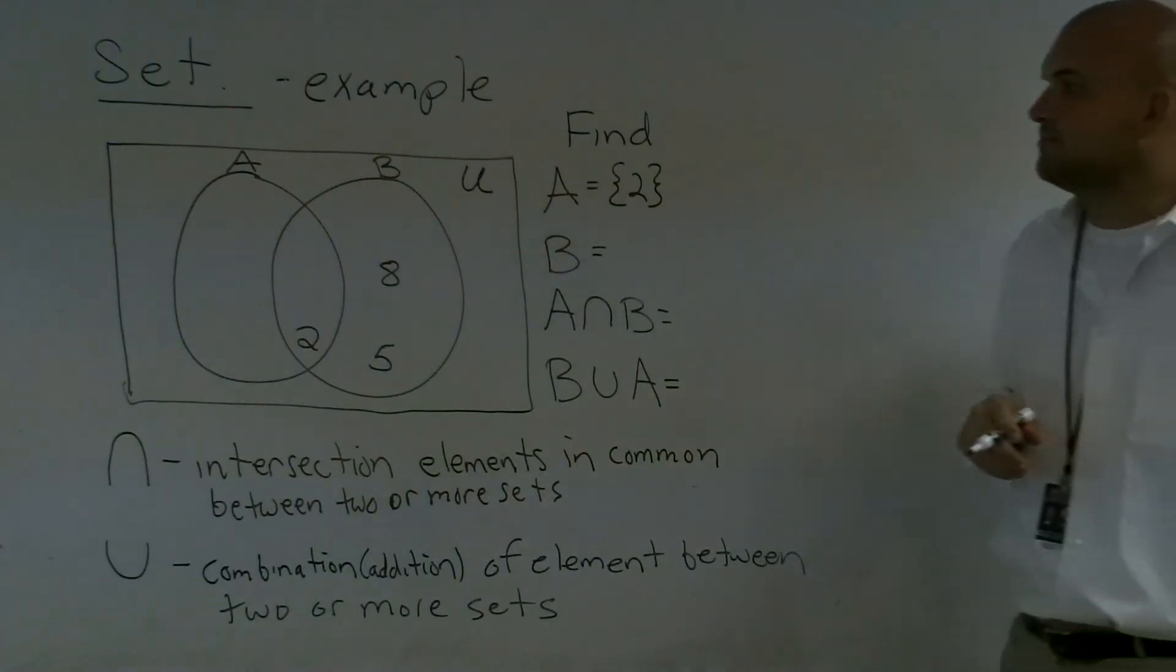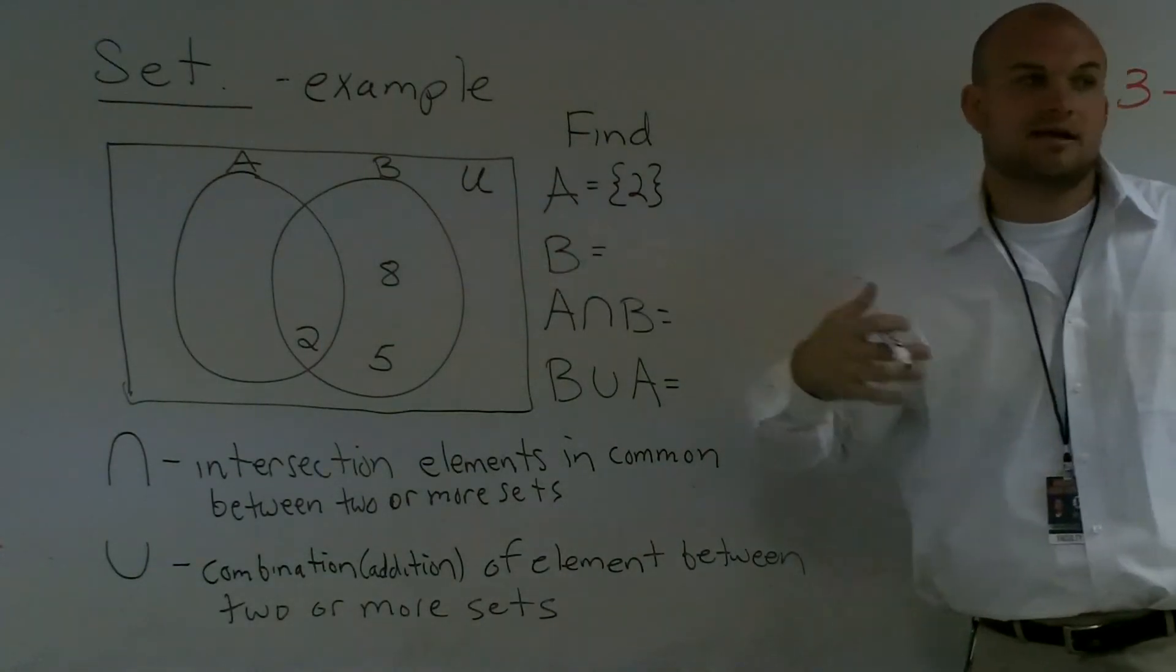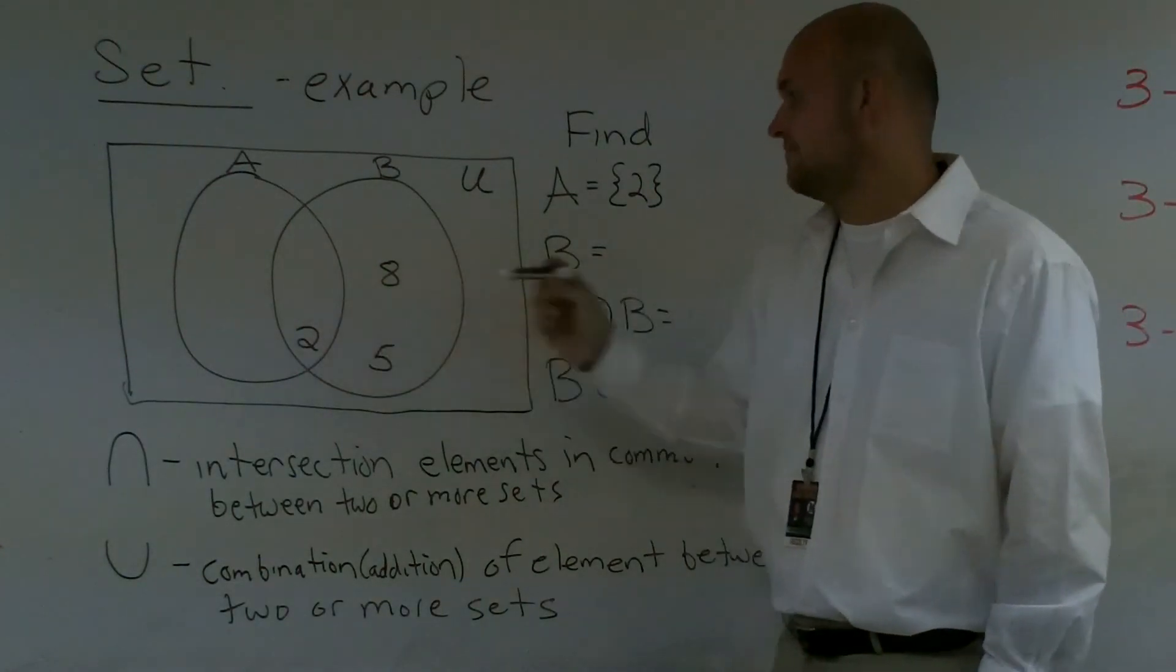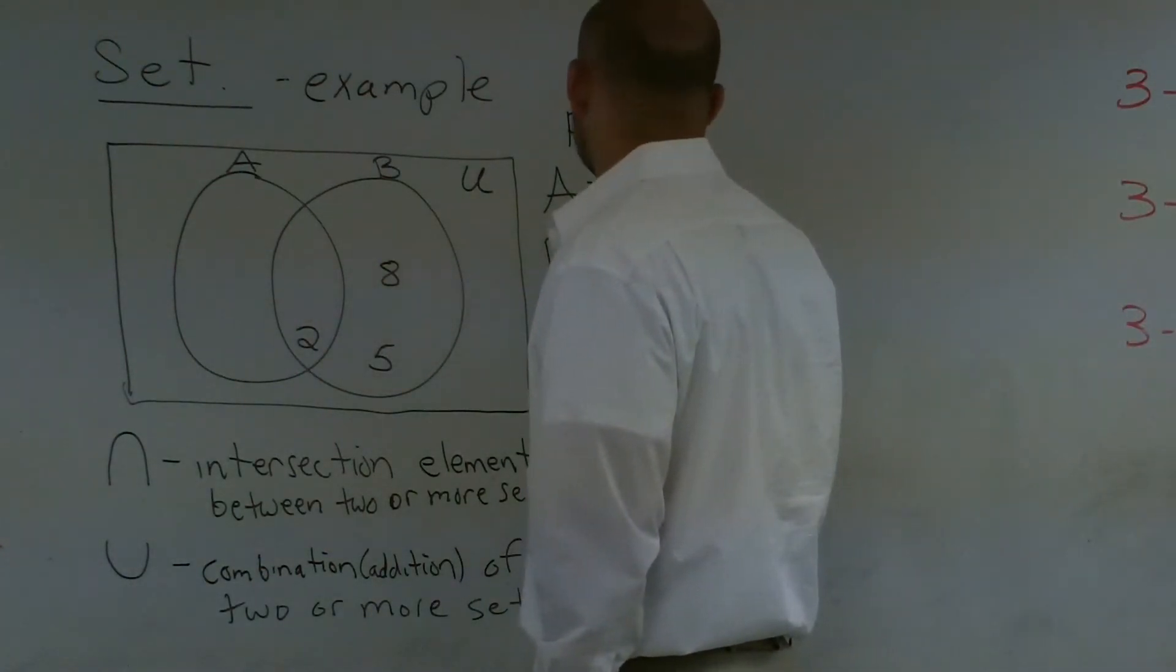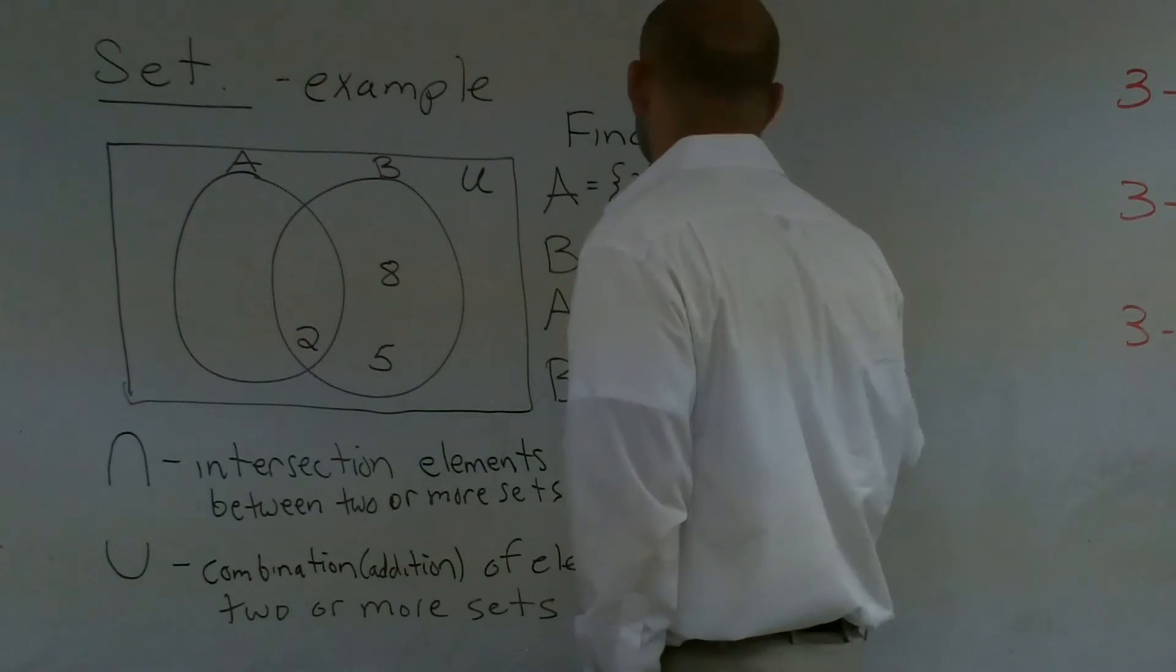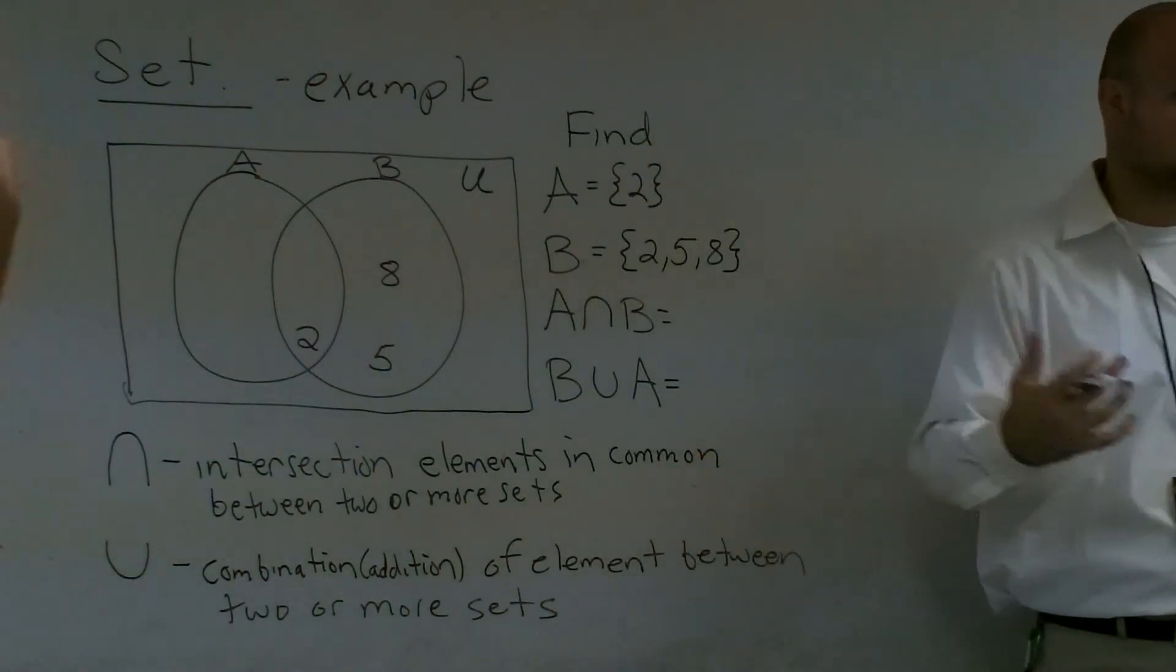Then I go and look at set number B. I look at my set B, and then I look at what are all the elements that are in the circle of B. And I have eight, two, and five. You don't need to get fancy with your brackets, but you need to make sure that they're closed.